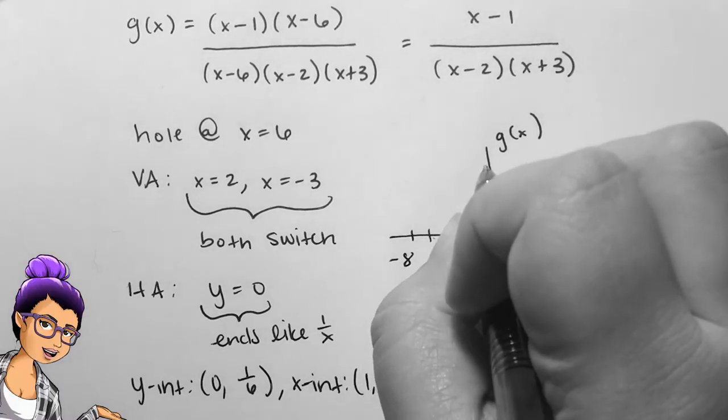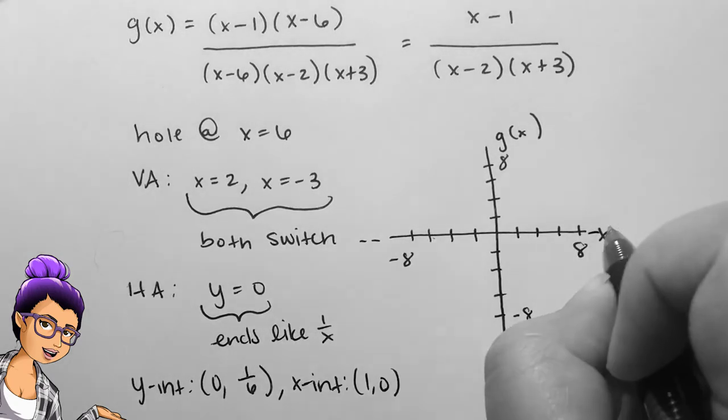We should also note that the y-intercept is at 0, 1/6th, and the x-intercept at 1, 0.